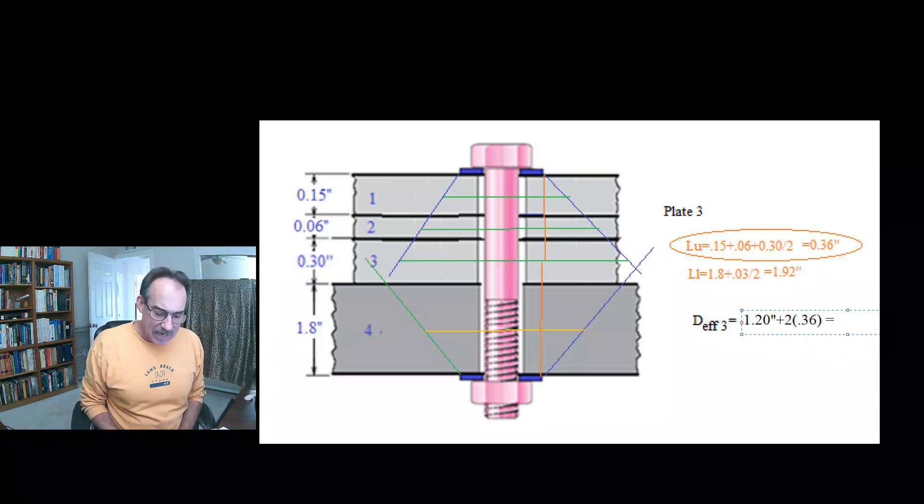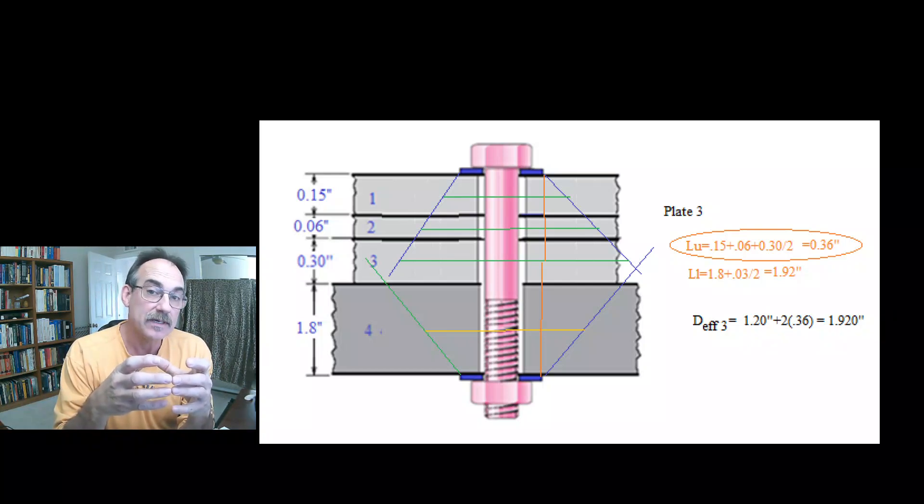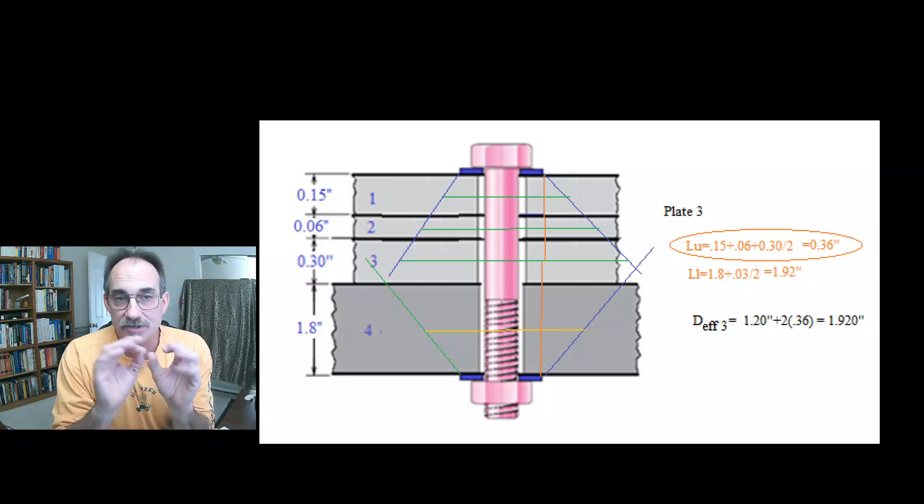So it's two times that 0.36 inch depth is how big that's going to get. When we calculate that, we're going to find that that's 1.920 inches. That will be the effective diameter that we use to calculate the stiffness of that assumed cylinder for that third plate.